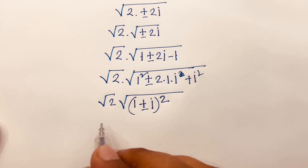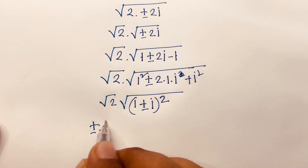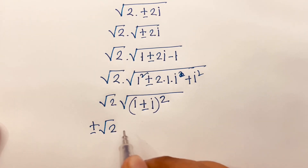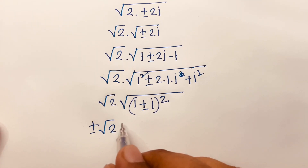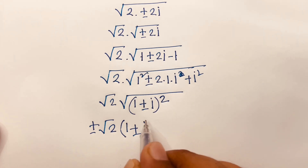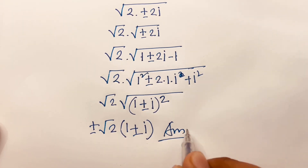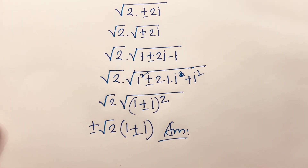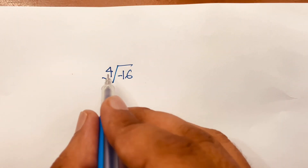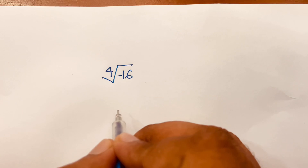Following the rule a² + 2ab + b², I can write this as (1 ± i)². The square root cancels, giving the final answer: ±√2 · (1 ± i).